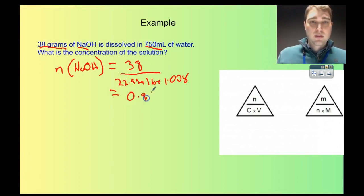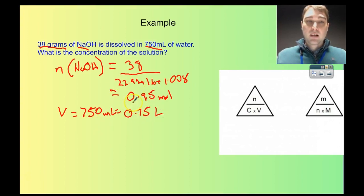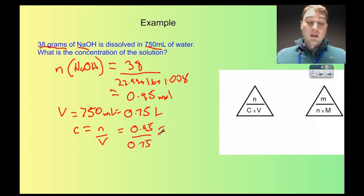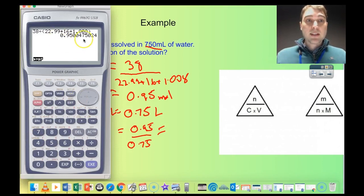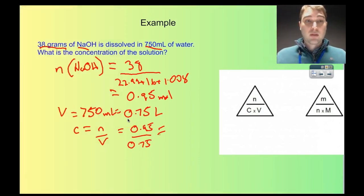So we get 0.95 moles. Now we have the number of moles, we can figure out the concentration. The volume is 750 millilitres, which converts to 0.75 litres. Writing the equation: concentration equals number on volume, so C equals 0.95 divided by 0.75. Using the calculator and keeping significant figures, we get 1.27, which rounded to two significant figures gives 1.3 moles per litre.